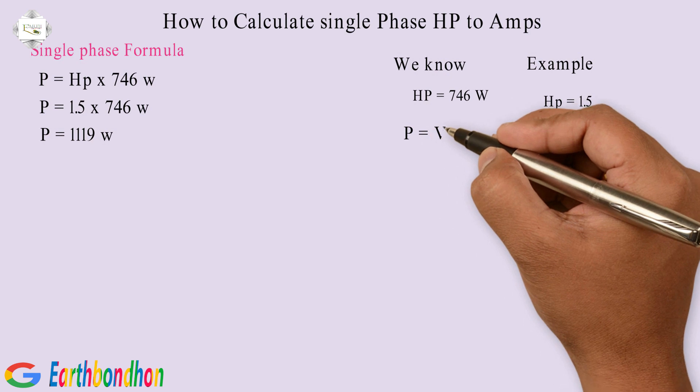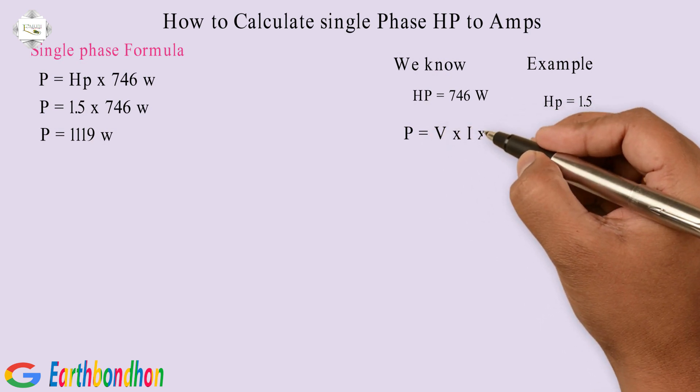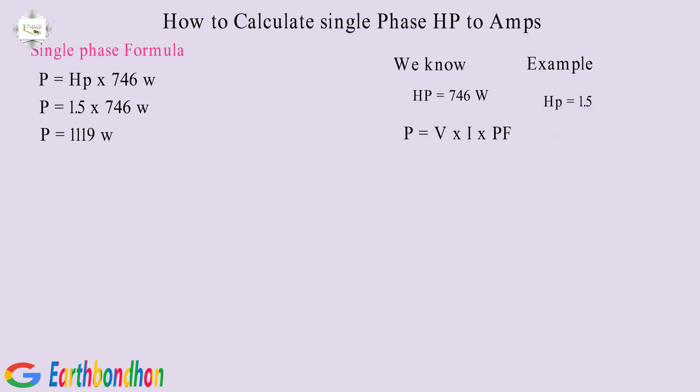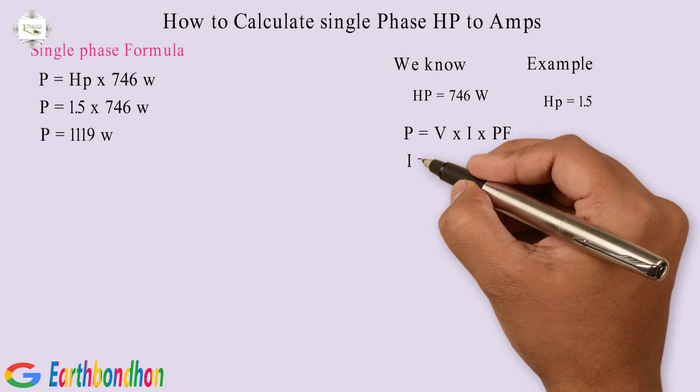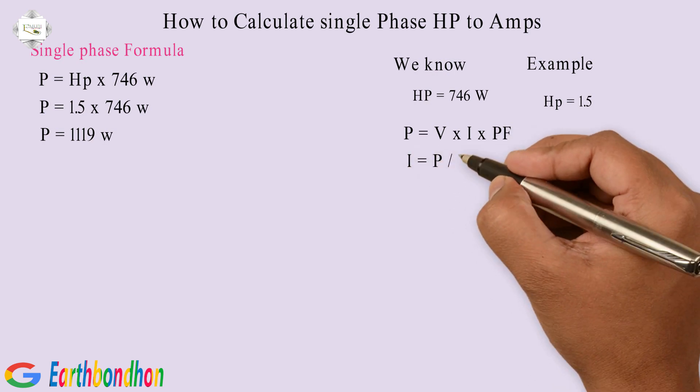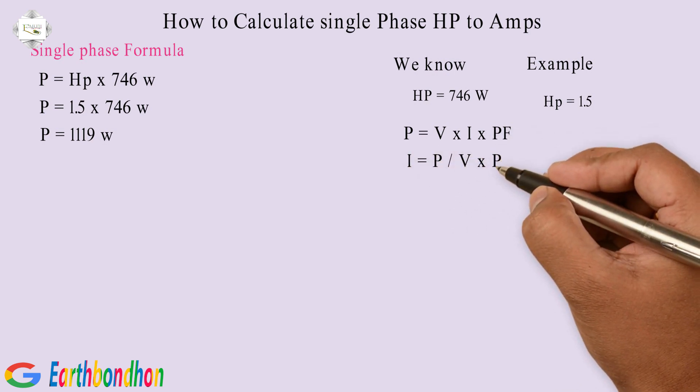Power equals Volt multiplication Current multiplication Power Factor. Current equals Power division Volt multiplication Power Factor.